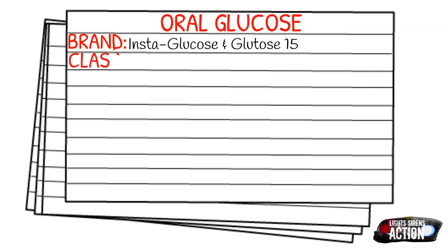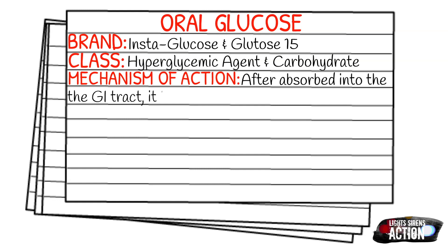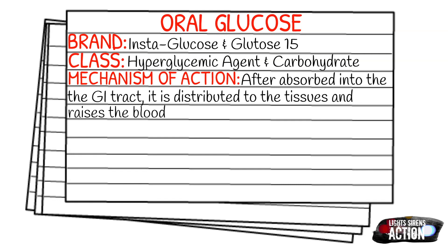The mechanism of action is fairly easy to understand. After it's absorbed into the GI tract, it is distributed to all the tissues and it raises the blood glucose level. The indication is suspected hypoglycemia in conscious patients — specifically conscious patients because, just like the name of the drug, it is given orally, so patients have to be awake and alert enough to protect their own airway.